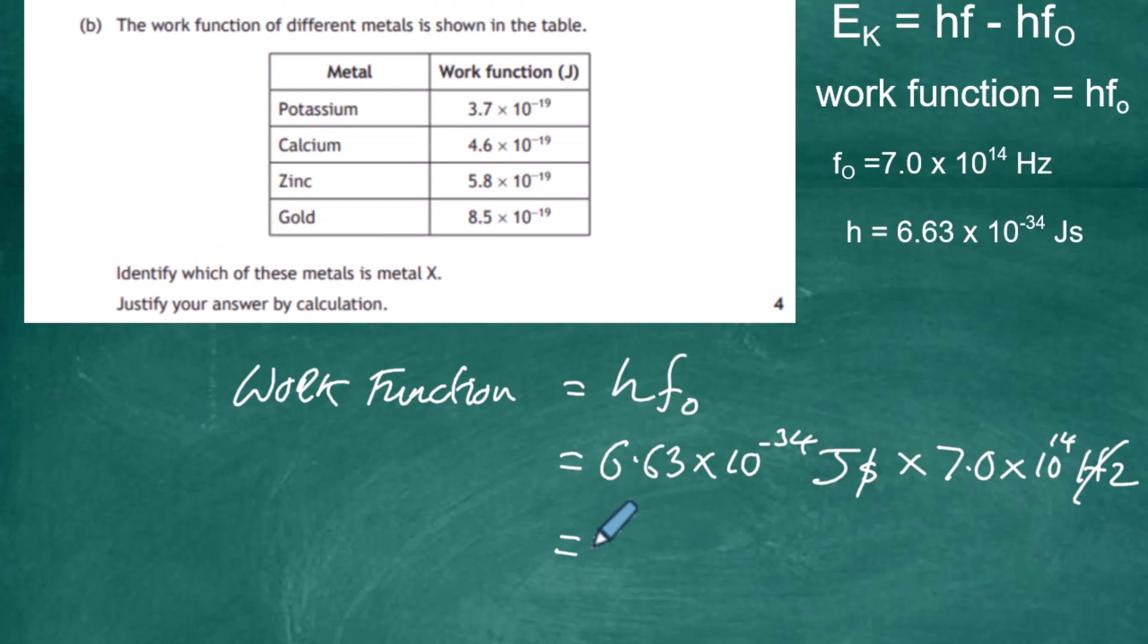We do that in a calculator. The work function for that particular material is 4.64 × 10⁻¹⁹ joules. We can round it to two significant figures: 4.6 × 10⁻¹⁹ joules. Looking at our table, it's calcium because calcium is 4.6 × 10⁻¹⁹ joules. So metal X is calcium, and we've justified it by working out the work function given the threshold frequency.